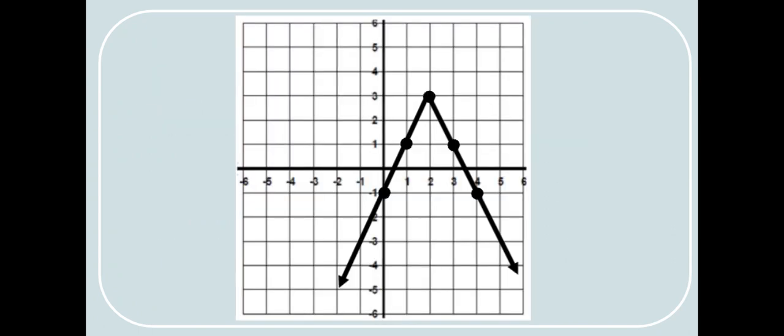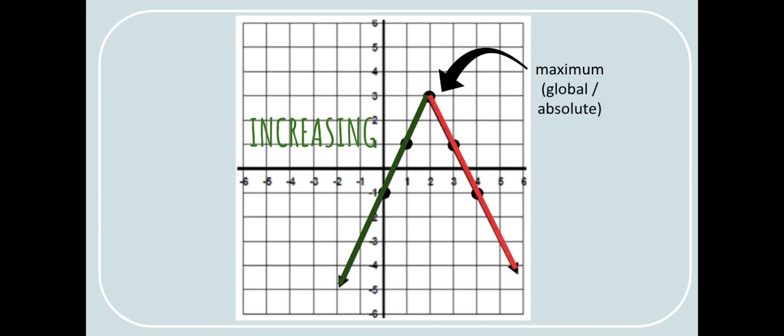So if we take a look at this graph, even though both arrows are pointed down, if we read from left to right, this is increasing. Here's a point where it changes direction, and that is our maximum. It's our global or absolute maximum in this case, and then it goes to decreasing.